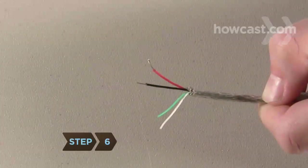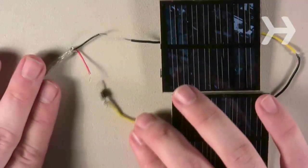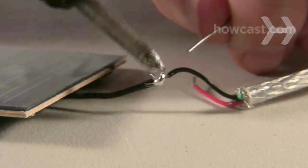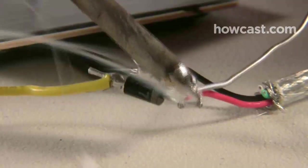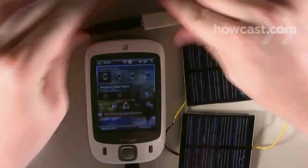Step 6. Solder the positive and negative wires in the USB cord to the corresponding wires of the solar panel. If using more than one panel, solder to the panel with the unused wires. Then, take the panels out into direct sunlight and see if they charge your device.